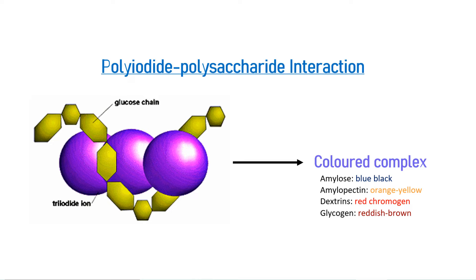Dextrins form a red chromogen, while glycogen produces reddish-brown color upon contact with iodine. The amylose component of starches forms a very dark blue-black complex with iodine, and the color is intense enough to effectively mask the orange-yellow color formed by amylopectin. This is why starch in general appears to produce only blue-black color with iodine. The color of the starch complex is so deep that it can be detected visually even when the concentration of iodine is as low as 20 micromolar at 20 degrees Celsius.